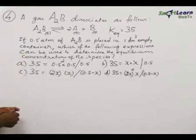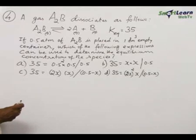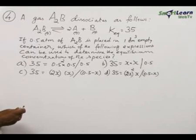Problem number 4: The gas A₂B dissociates as follows: A₂B gives 2A plus B. For this equilibrium, the equilibrium constant is 35.